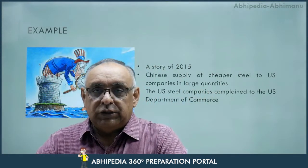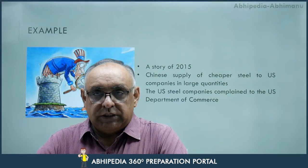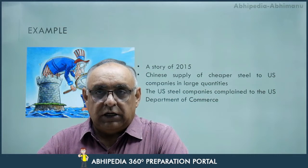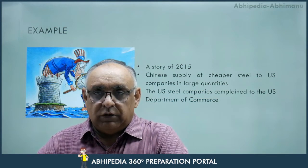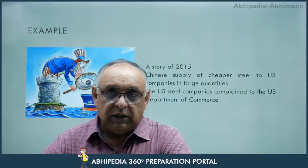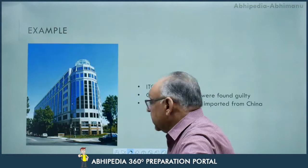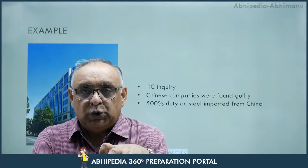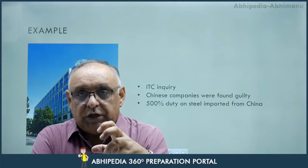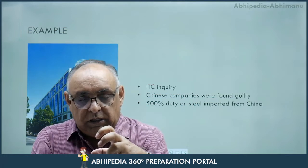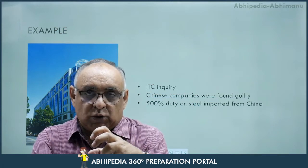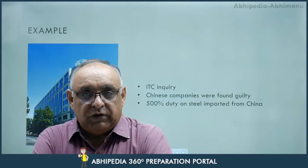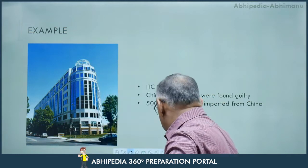Yeh 2015 ki story hai. Chinese company ne US ke andar bahut cheaper rate ke upar steel ki supply karni start kar di in large quantities. Toh US steel companies ne US Department of Commerce ke aage complaint darj kar vai. US Department of Commerce ne International Trade Commission se inquiry karai. And US inquiry mein yeh paaya gaya ki Chinese companies are guilty — they are trying to harm the US companies. And China se import hone wali steel ke upar 500% duty impose ki gai. So, this was the basic story.